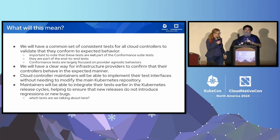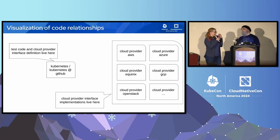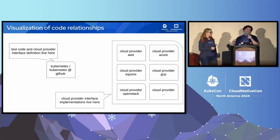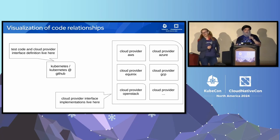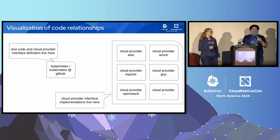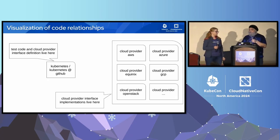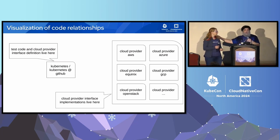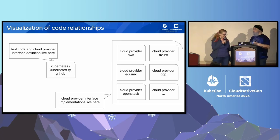Which kinds of tests are we talking about? There's a diagram showing Kubernetes at the center — that's the repository for all the Kubernetes code and test code, plus the definition of the cloud provider interface to the testing. Then there are separate repositories: cloud provider AWS, cloud provider Azure, maintained by individual project teams. The implementation of the interface will live in those repositories.